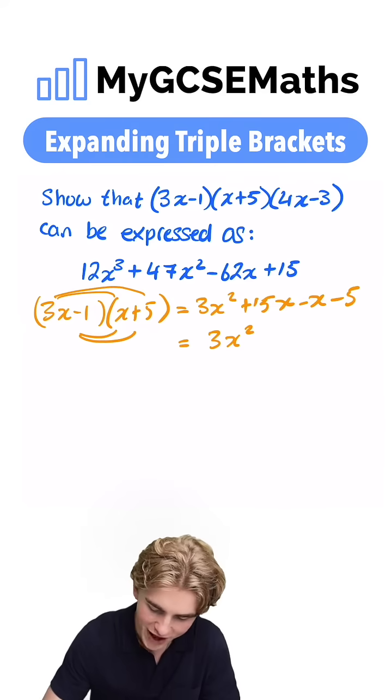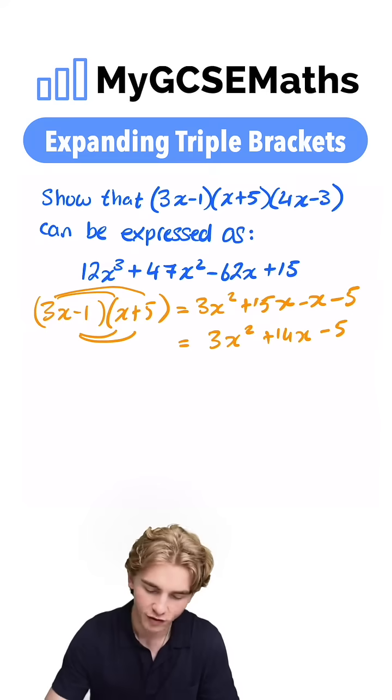Collecting our like terms, we have 3x squared. 15x minus x, that's gonna be 14x, and we have our minus 5 on the end.